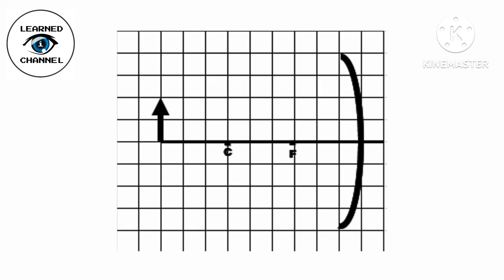First, strike the ray to the mirror and then reflect it to the focus. Next, strike the focus and reflect it to the parallel axis. Then the image formed will be between